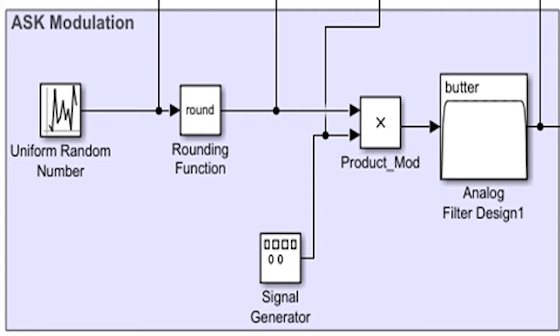Signal generator generates carrier signal, a sinusoid wave. And product mode is to actually multiply the two signals together. Normal multiplication.